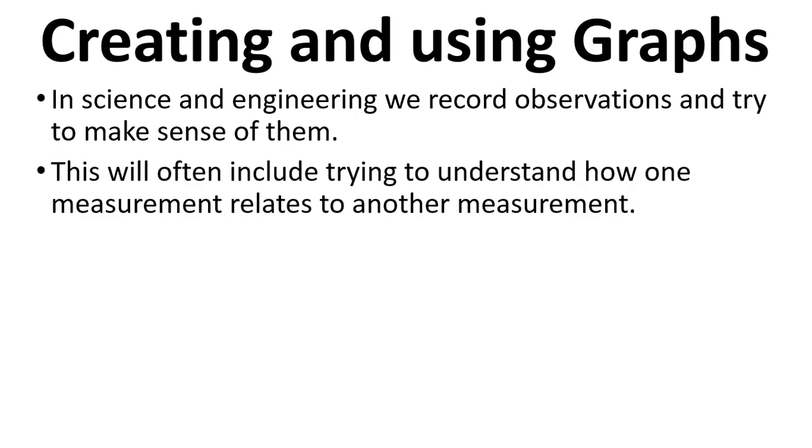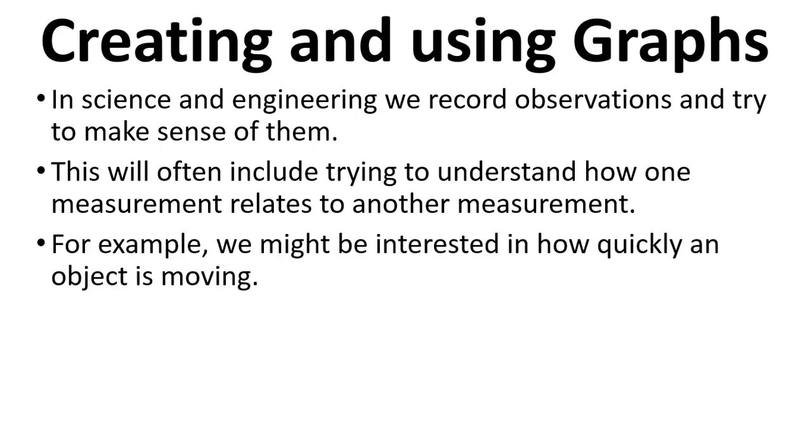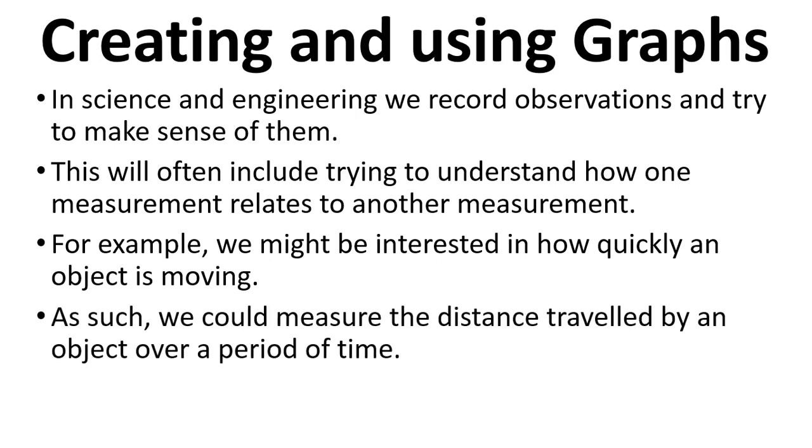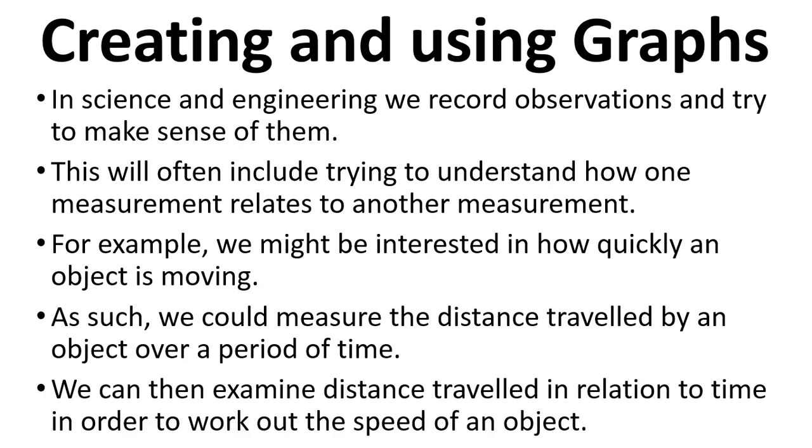And this will often include trying to understand how one measurement relates to another measurement. For example, we might be interested in how quickly an object is moving. So we could measure the distance travelled by that object over time. And then we can examine distance travelled in relation to time to work out something about the speed of the object.